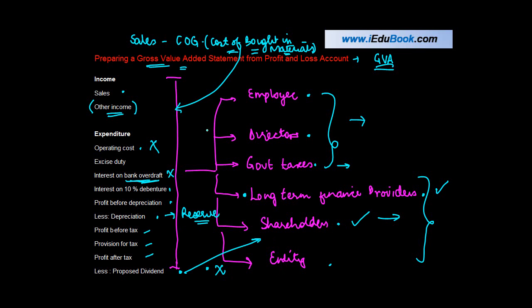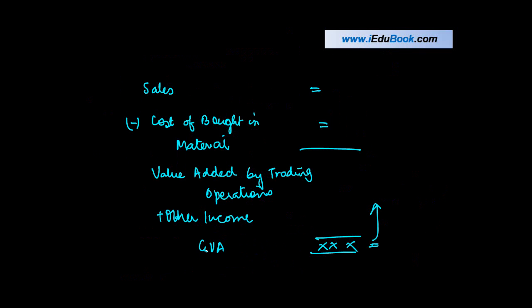We will understand each of these categories in detail. The idea to tell you here was that you have to calculate GVA by taking the sales figure. From that, you reduce whatever is the cost of bought in material. Cost of bought in material excludes any item belonging to the six categories that we discussed. It gives you value added by the trading operations. Add other income to it, you get the GVA.